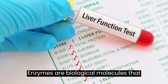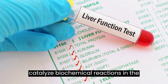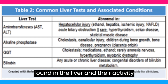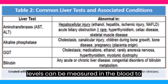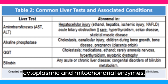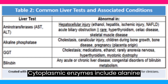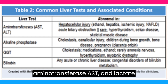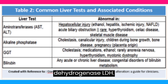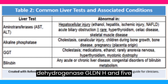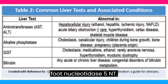Enzymes are biological molecules that catalyze biochemical reactions in the body. Many enzymes are found in the liver, and their activity levels can be measured in the blood to assess liver function. Liver enzymes are divided into two groups: cytoplasmic and mitochondrial enzymes. Cytoplasmic enzymes include alanine aminotransferase (ALT), aspartate aminotransferase (AST), and lactate dehydrogenase (LDH). Mitochondrial enzymes include glutamate dehydrogenase (GLDH) and 5-prime nucleotidase (5-NT).